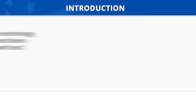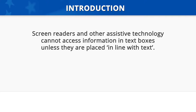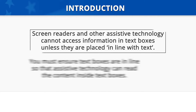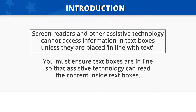Introduction: Screen readers and other assistive technology cannot access information in text boxes unless they are placed in line with text. Therefore, you must ensure the text boxes are in line so that assistive technology can read the content inside text boxes.